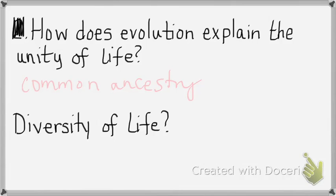But life is also very different — living on Earth today we have over 2 million species. How can evolution explain so many different kinds of insects, birds, and plants? Natural selection. Are all environments the same? No — there are probably hundreds of thousands of different types of environments, and organisms have adapted to different environments.